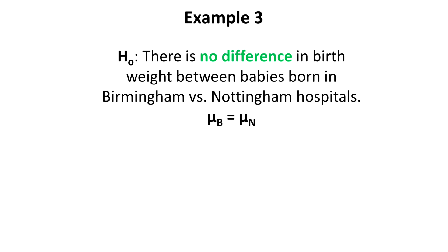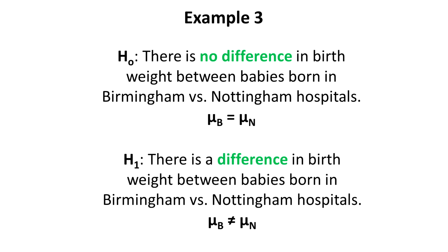In this example, we have the null hypothesis that there's no difference in birth weight between babies born in Birmingham hospitals, mu b, and babies born in Nottingham hospitals, mu n. But the alternative could be that there is a difference. This is where something interesting is going on. In this case, the birth weight is different between babies born in the two locations, mu b does not equal mu n.